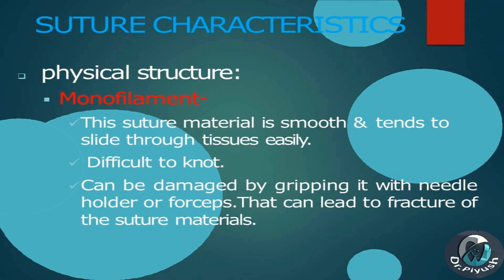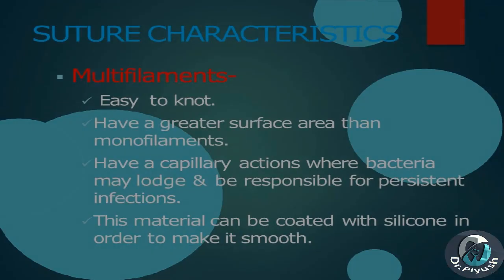Monofilament: the suture material is smooth and tends to slide through tissues easily. It is difficult to knot. It can be damaged by gripping with a needle holder or forceps, which can lead to fracture of the suture material.